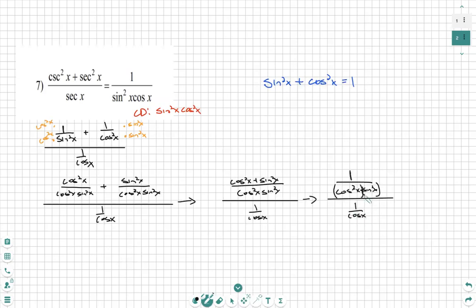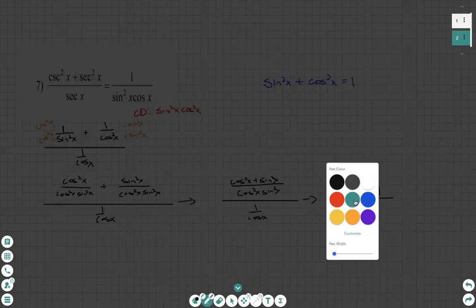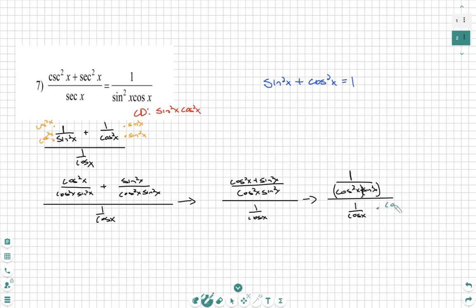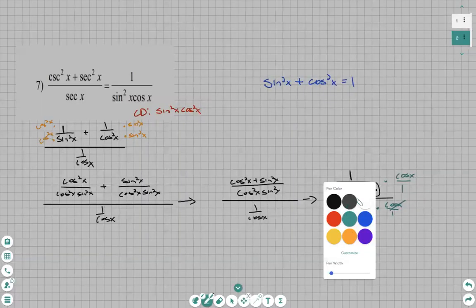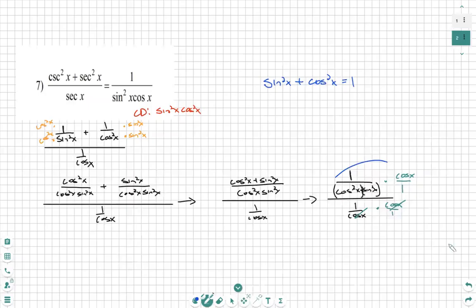Now, when we have a fraction over a fraction, we need to clean that up. We can't have multiple numerators and denominators. So what we do is take our denominator and multiply it by the reciprocal top to bottom. We do this because this will now cancel the bottom and becomes a multiplication.